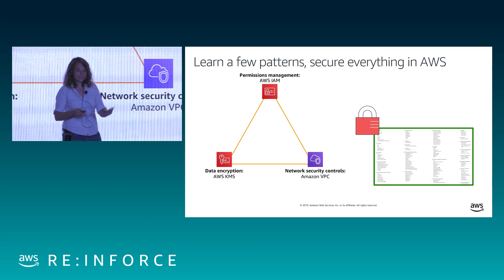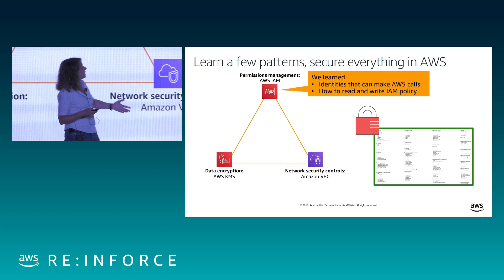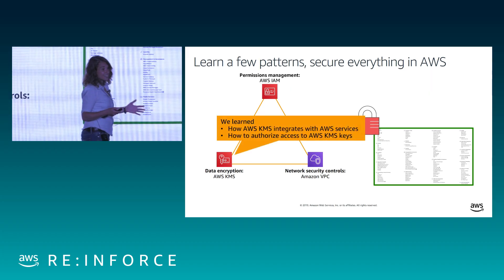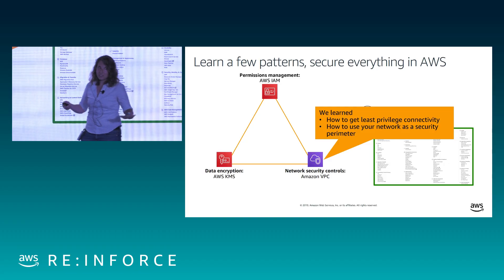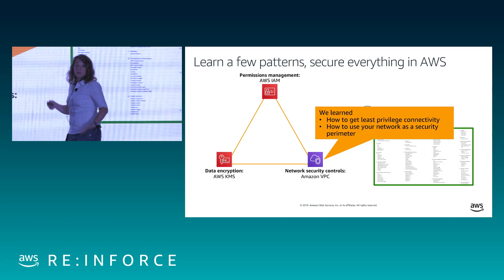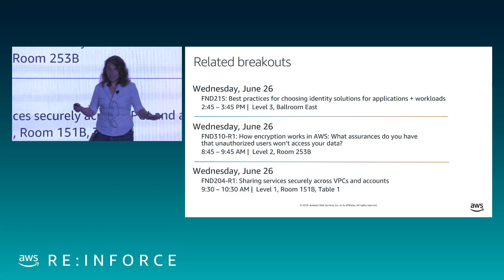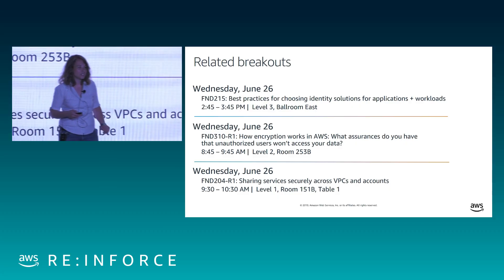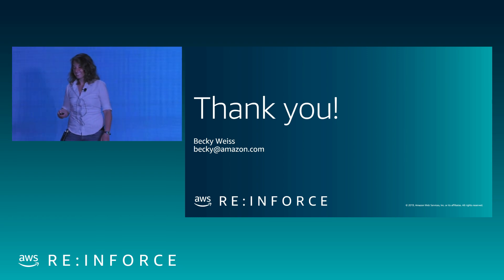So what did we talk about here? We talked about how you can learn a few patterns and secure everything in AWS. We talked about IAM — what it's for, how identities make AWS calls, and how to read and write policies. We talked about how you protect your data and what to look for in AWS services integrated with KMS. And finally, we talked about security groups and routing for networking. Go back home, use these patterns, apply them to secure your environment. I hope you come away from here able to move a little bit faster on security than before. Thank you so much for coming out here today.